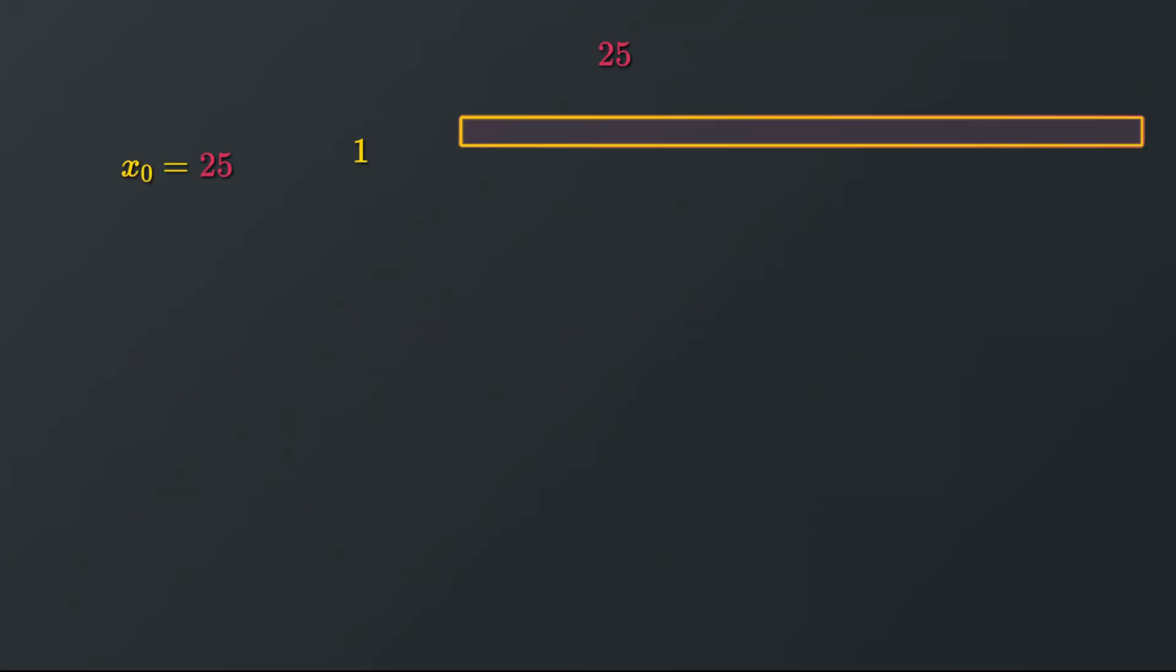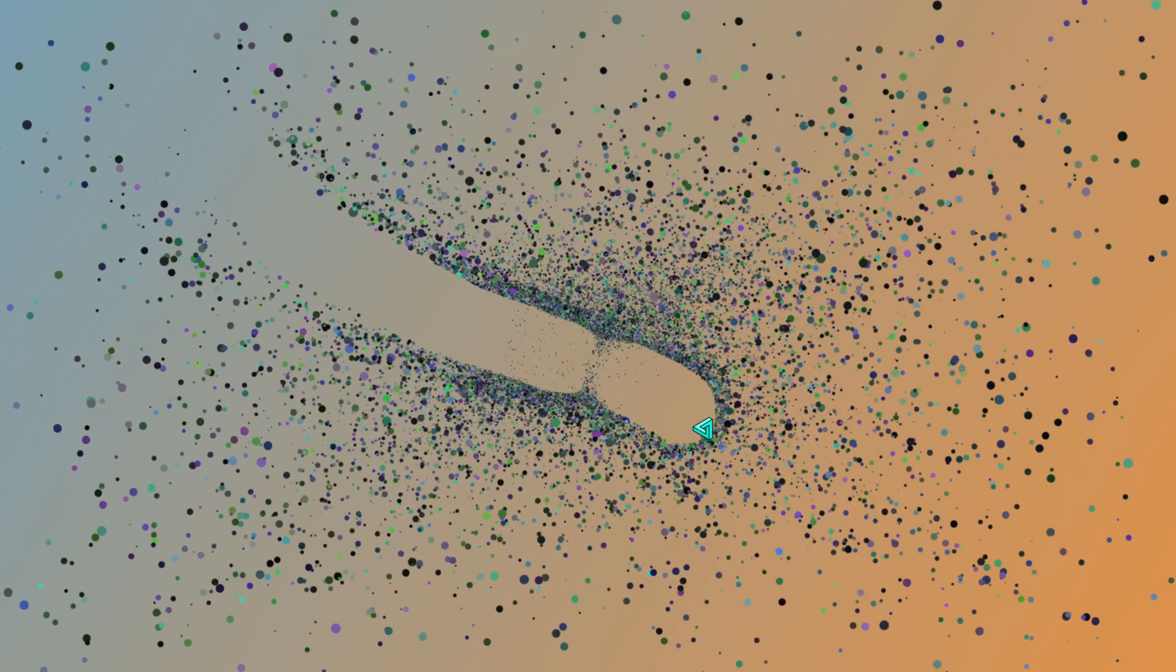Then we can let the recursion do its magic. Until at some point some stopping criterion is met and our result is accurate enough. That's why we stop. The square root is 5.